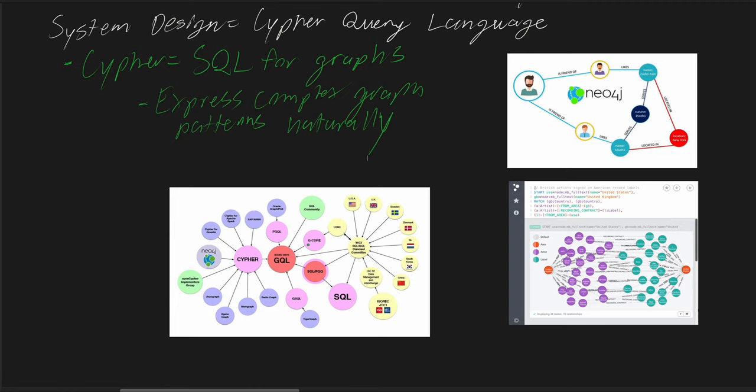In Cypher, vertices and edges in the graph are described using a pattern matching syntax. There's a pattern matching syntax which models after ASCII art. Vertices are depicted in parentheses, akin to nodes or in trees.